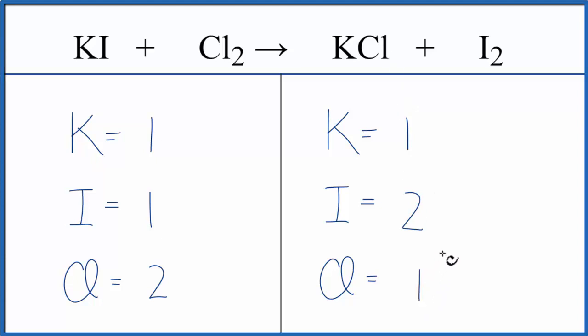So it looks like the iodines and the chlorines, those aren't balanced. Let's fix the iodines first. We can put a 2 in front of the KI. One for the iodine times two, that'll give us two, so that's balanced.